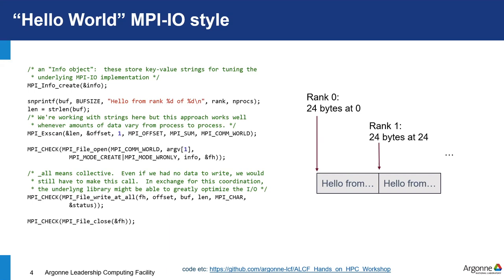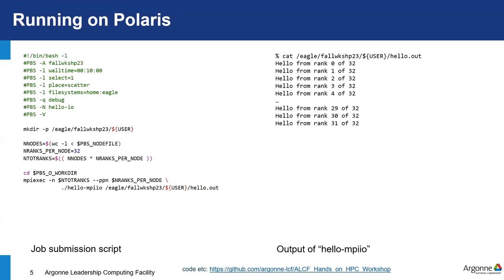An offset value tells each process where to write in the file. There's a job script to submit the example — similar to others at this workshop. Importantly, the default striping on Polaris in the Eagle directory is one stripe, which is often bad for performance. We'll talk more about striping parameters.